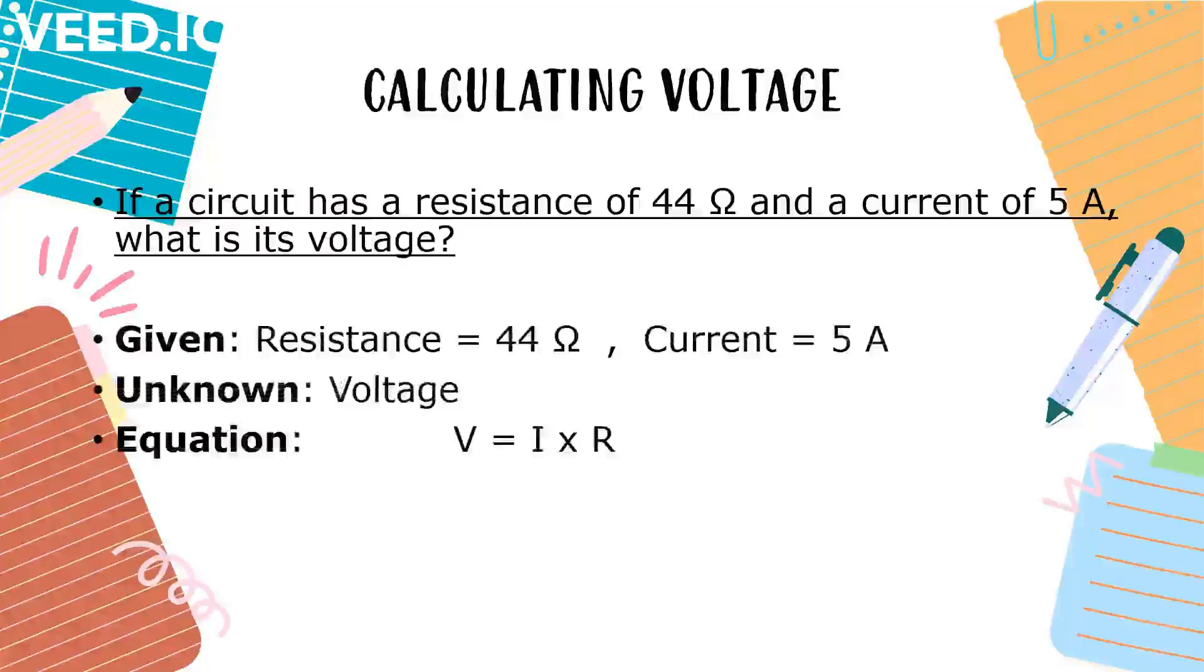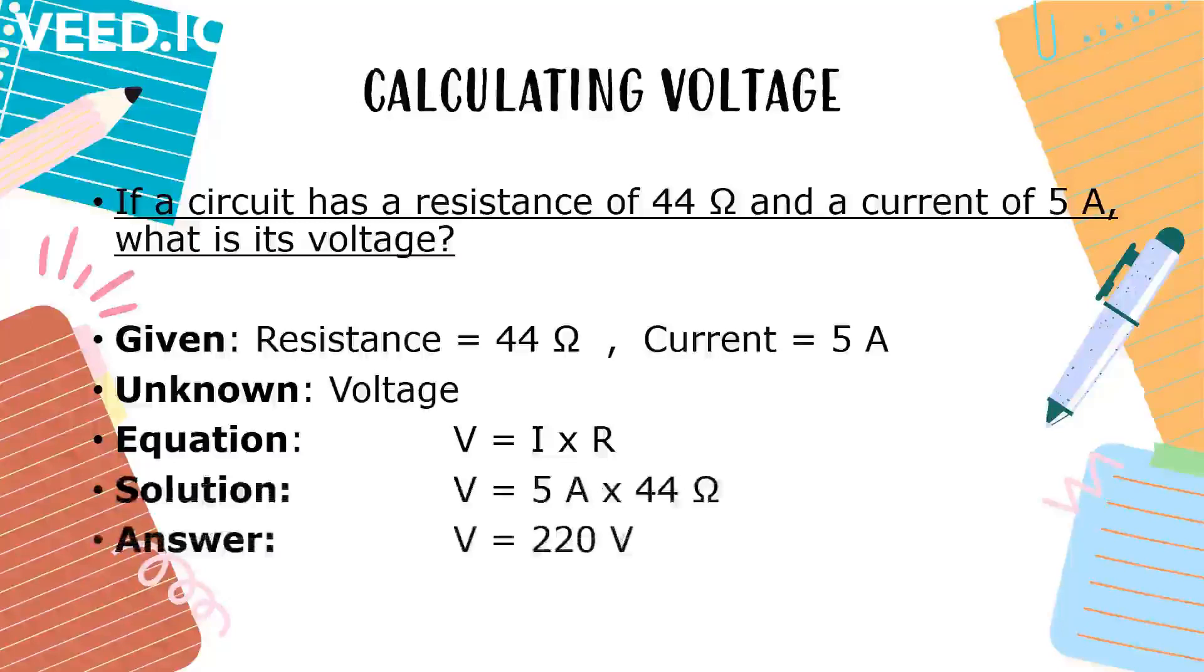Equation will be, V is equal to I times R. Solution, V is equal to 5 amperes times 44 ohm. And the answer is, V is equal to 220 volts.